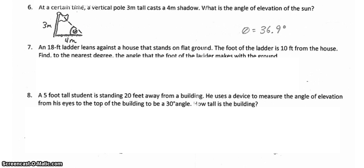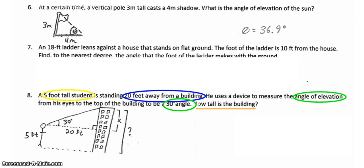Lastly, let's look at eight. A five-foot-tall student is standing 20 feet away from a building. He uses a device to measure the angle of elevation from his eyes to the top of the building to be a 30-degree angle. How tall is the building? So I noticed that the 20 feet away from the building will be important, and the angle of elevation being 30 degrees will be important, and it's asking about how tall the building is. That's the question I've underlined in orange, but what about this five-foot-tall student? How will that work into this? The best way to figure it out will be to draw the diagram. And so here's my diagram.